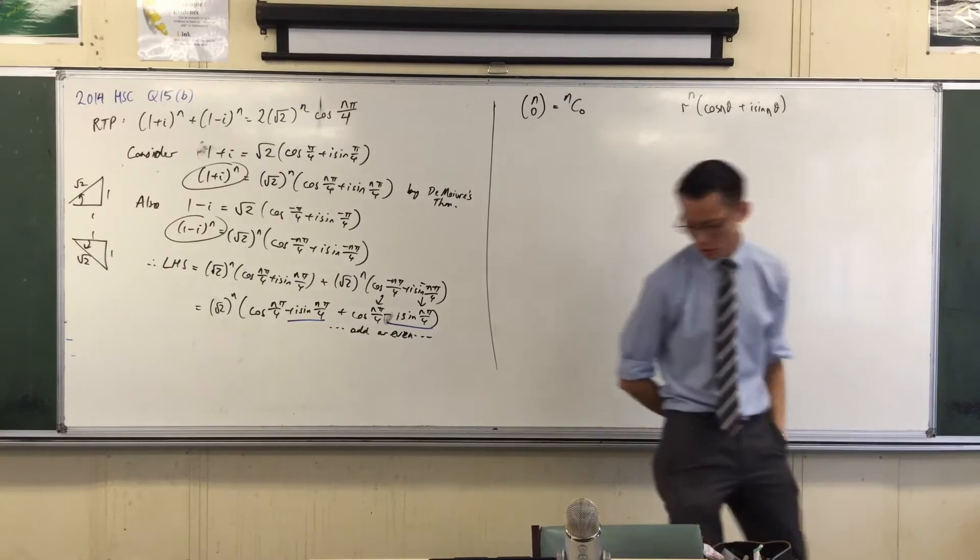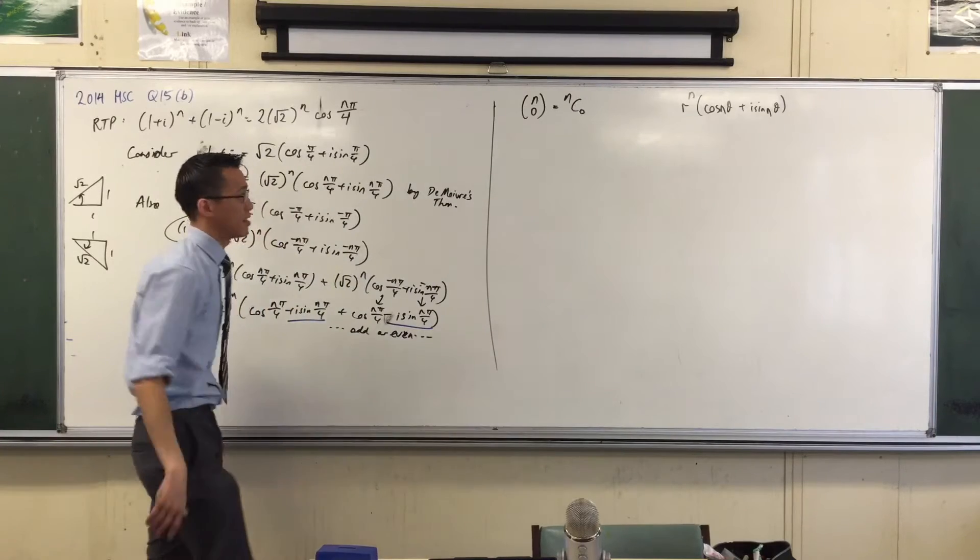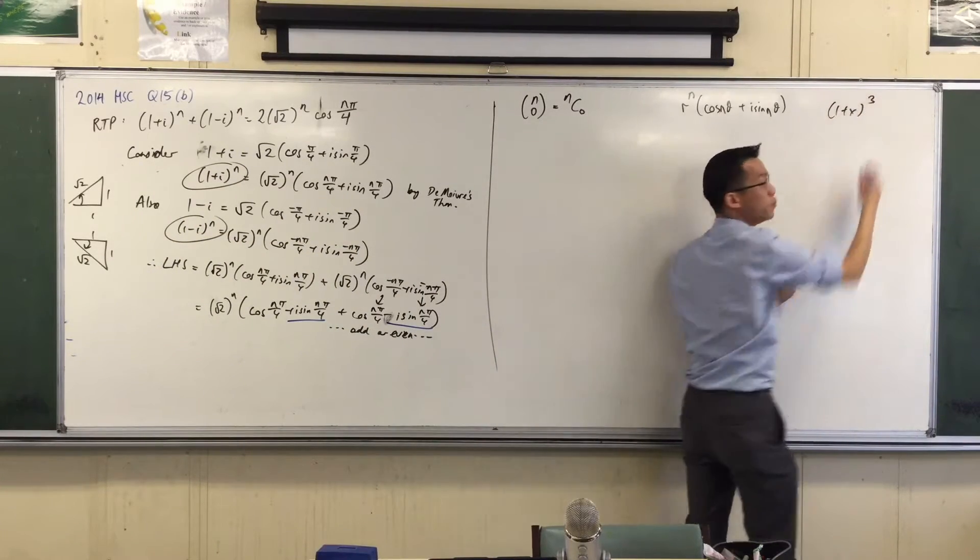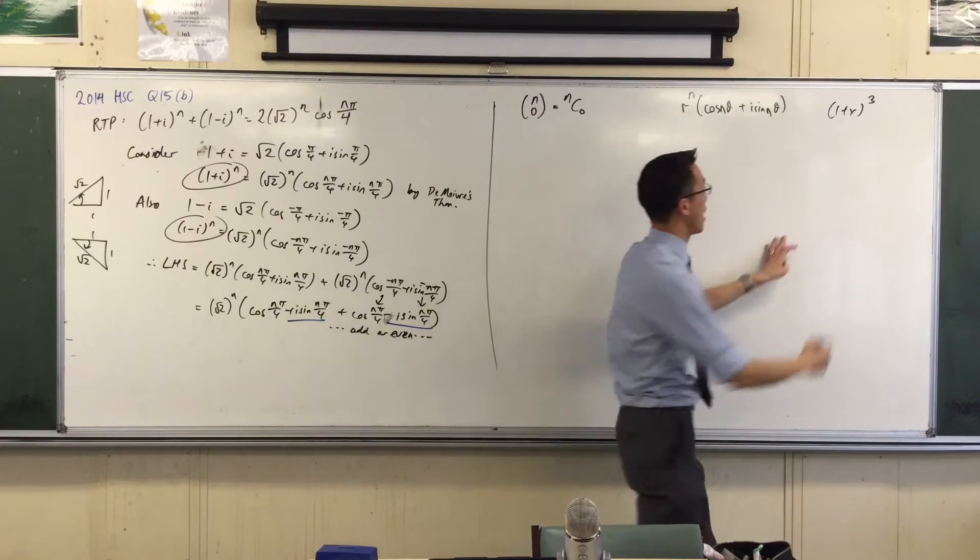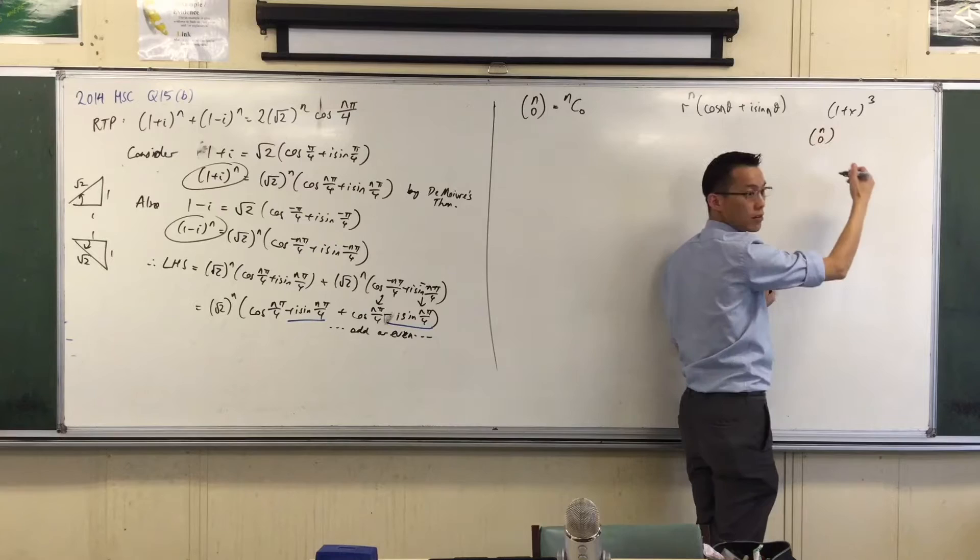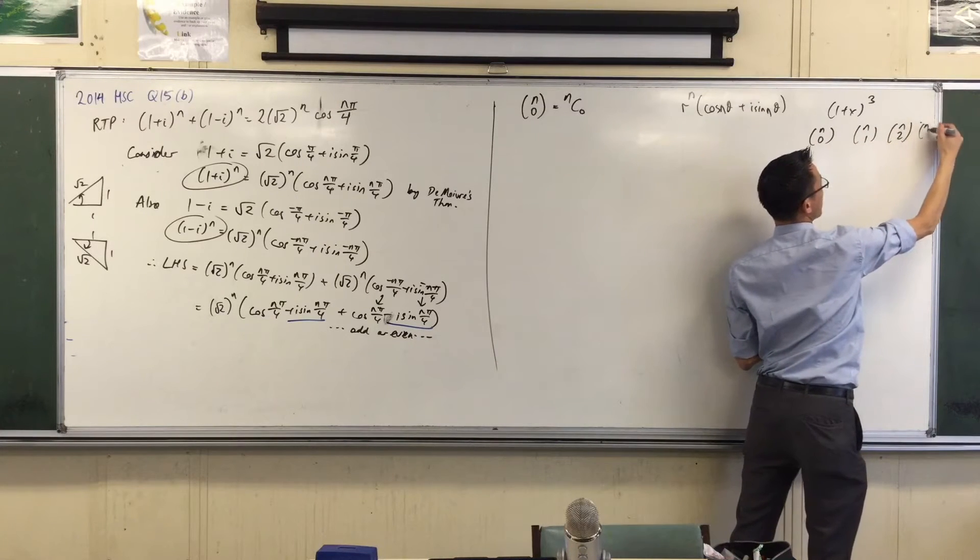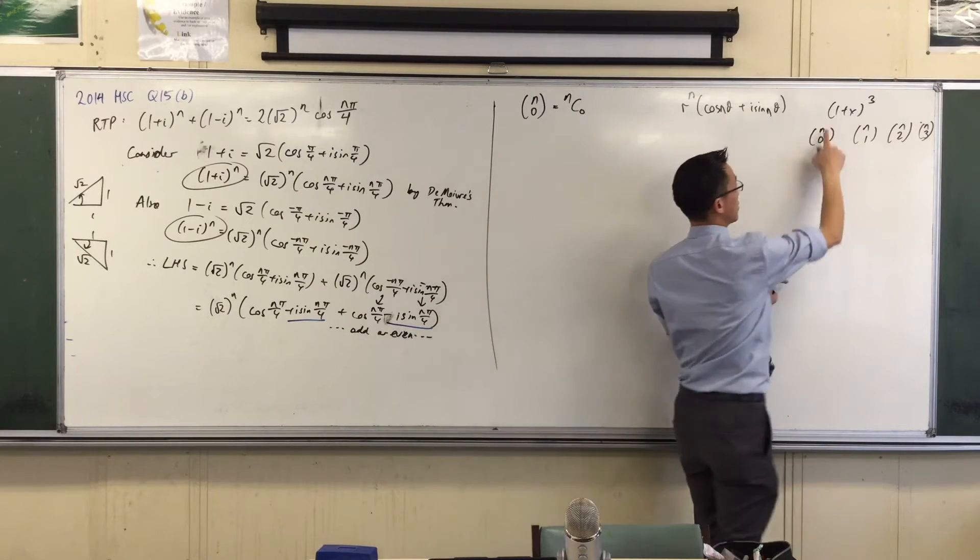You go from zero all the way up until n. Why would you go all the way up until n? Let's think about it this way. If I gave you 1 plus x cubed, the binomial coefficients that you're going to get out of that from Pascal's triangle are going to be n0 and then n1 and then n2 and then you'll end with n3, where n actually happens to be 3 in this case.